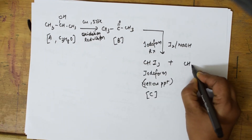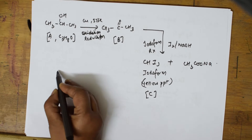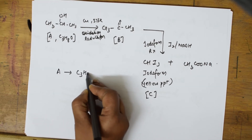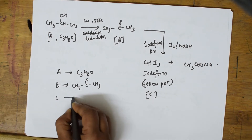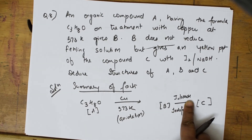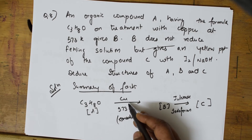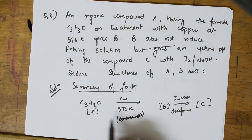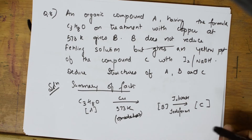Along with CHI3 (iodoform), the leftover gives the sodium salt of a carboxylic acid. So compound A is C3H8O (secondary alcohol, propan-2-ol), compound B is methyl ketone CH3-CO-CH3, and compound C is iodoform CHI3. The clue was: iodoform reaction means methyl ketone; copper at 573K means dehydrogenation of a secondary alcohol.